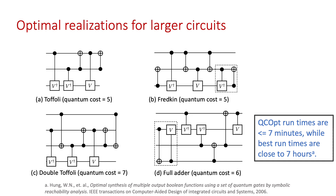We also obtained optimal realizations for larger circuits with up to 4 qubits using this package. Target unitaries considered include the Toffoli, Fredkin, Double Toffoli, and Quantum Full Adder gates. Interestingly, the optimal realizations are identical to those obtained in a reference paper; however, the runtimes of the package are close to 60 times faster — particularly for the Quantum Full Adder gate — attributed to the quality of MIP formulations in this package and improvements in MIP solver technologies.